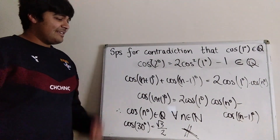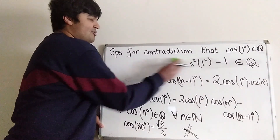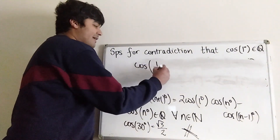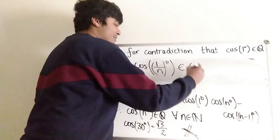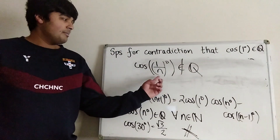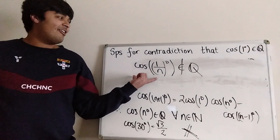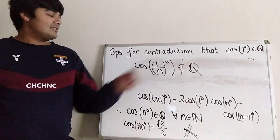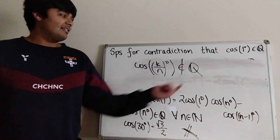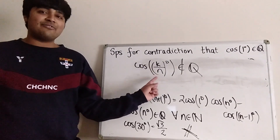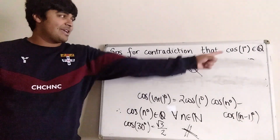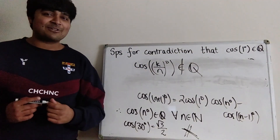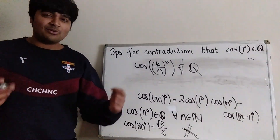We could stop here, but I'll leave one little remark: we can actually prove something a little bit more general. In fact, we can show that cosine of (1/n)° is irrational for all positive integers n. We can use a very similar argument — if cosine of (1/n)° is rational, we can use this inductively to prove that cosine of (k/n)° is rational. Then setting k equal to n gives us back cosine of one degree, which is not rational. Hence cosine of (1/n)° cannot be rational and must be irrational. I'll leave that as a little exercise.